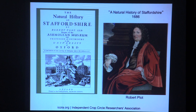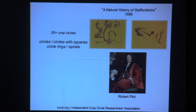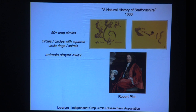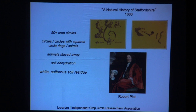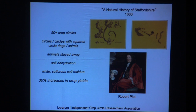In the same century, a fellow named Robert Plott wrote The Natural History of Staffordshire. He was curious and out in the field, finding more than 50 crop circles, circles with squares, circle rings, spirals. He noticed that animals stayed away. He found soil dehydration in the patterns and a white sulfurous soil residue — some strange chemical in those crop formations. I hope your jaw is dropping, because the yield right where the crop circle was, was as much as 30% better than the surrounding crop.